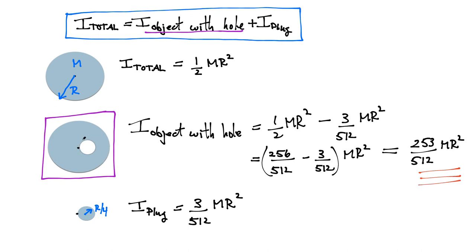If the cutout radius were larger, say r/2 instead of r/4, the plug mass would be much bigger and you'd get a noticeably different result. Whenever you see a moment-of-inertia problem with an object with a hole, use the subtraction equation: I_hole = I_total − I_plug. You typically know I_total and can easily find I_plug. Hope that helps — thanks for watching, and feel free to leave a comment or suggestion.